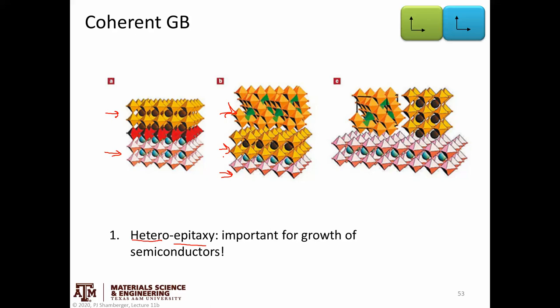Heteroepitaxy means growing a layer of something different from the underlying layer. Homoepitaxy would be growing, say, silicon on top of silicon. This is very important particularly for semiconductor growth — gallium arsenide grown on top of silicon, or silicon carbide used as a substrate to grow gallium nitride. In all these cases, we use one substrate that's easy to make in bulk form, and then grow very perfect single-crystal layers on top of that, where the epitaxial layer is the one we care about.